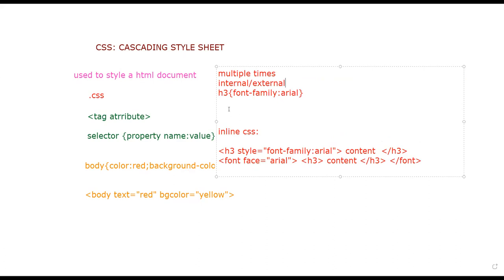Internal CSS means you are using this line of code inside the head tag — the formatting is written inside the head section. For H3 with Arial font styling, if using external CSS, we will create a separate HTML file and a separate CSS file and link both files together. We will still write only once: H3 { curly brace with properties }.